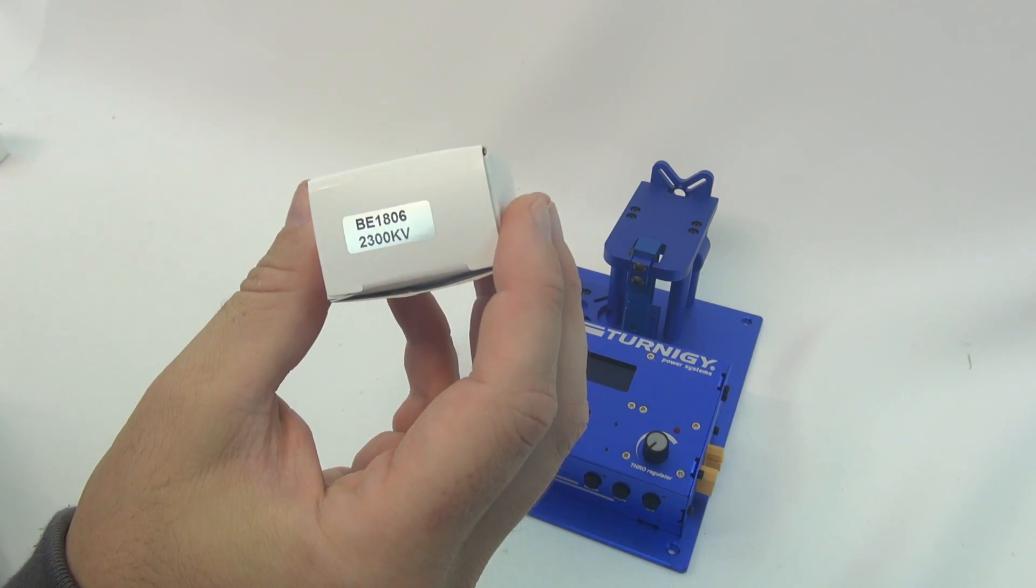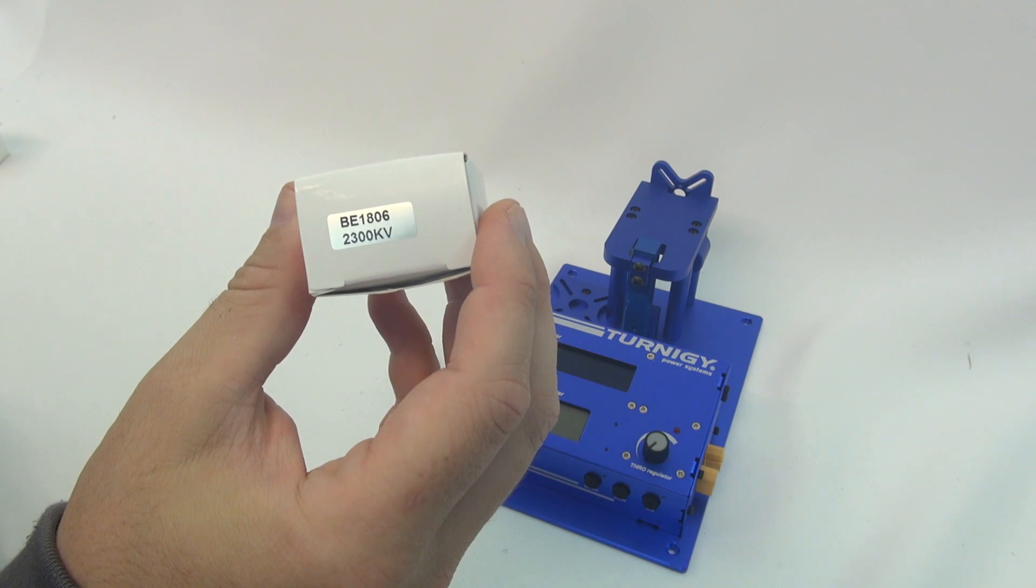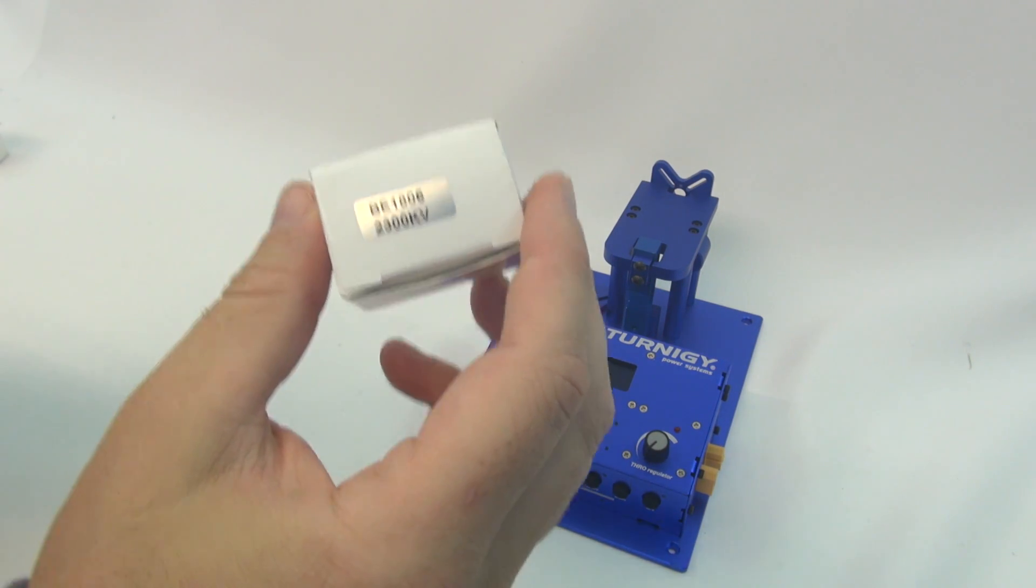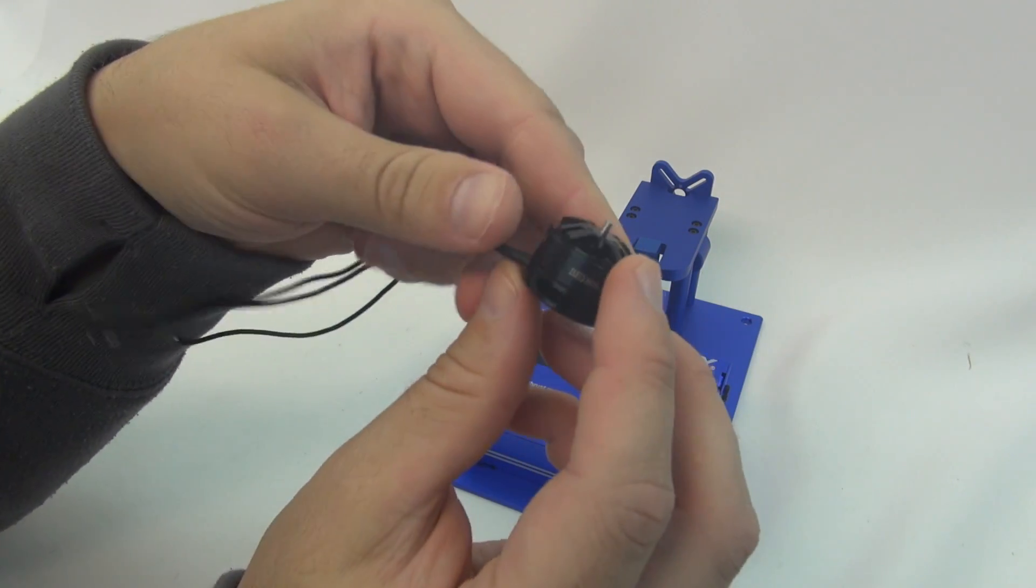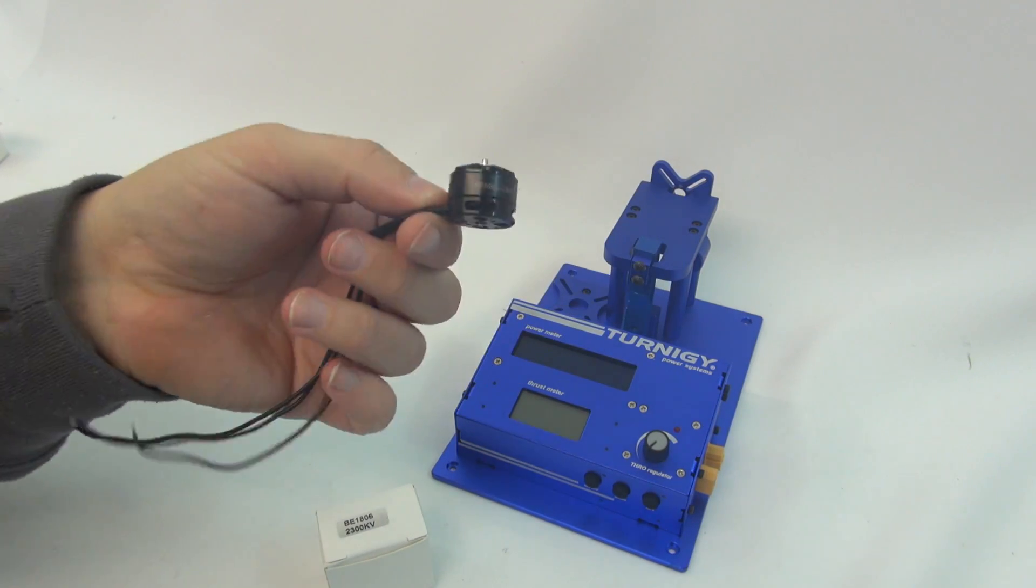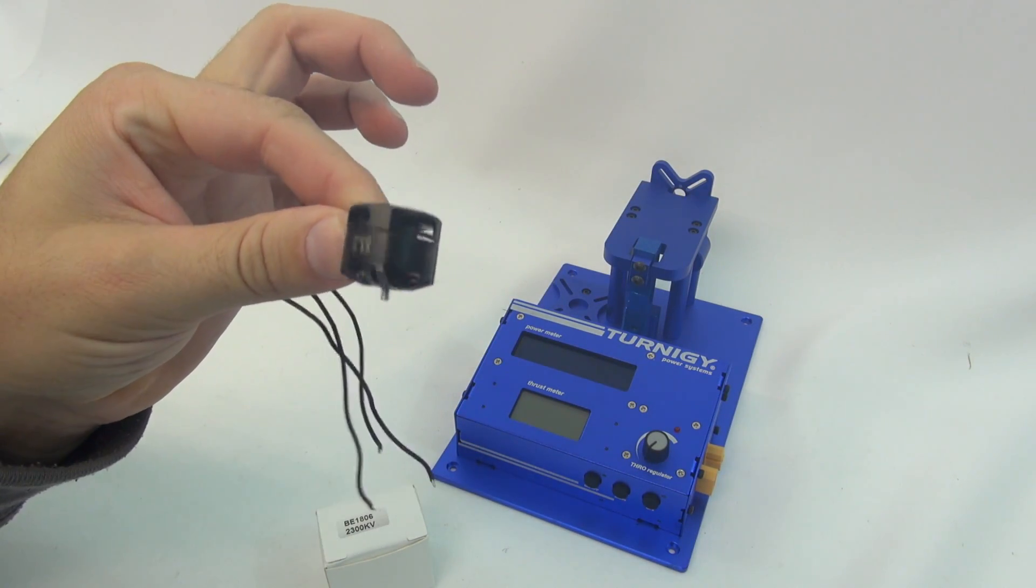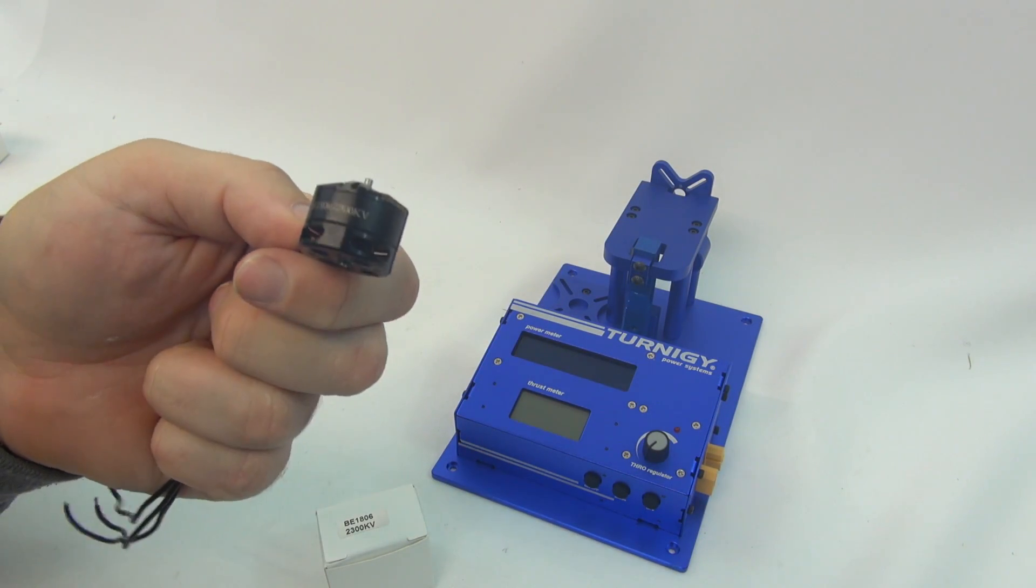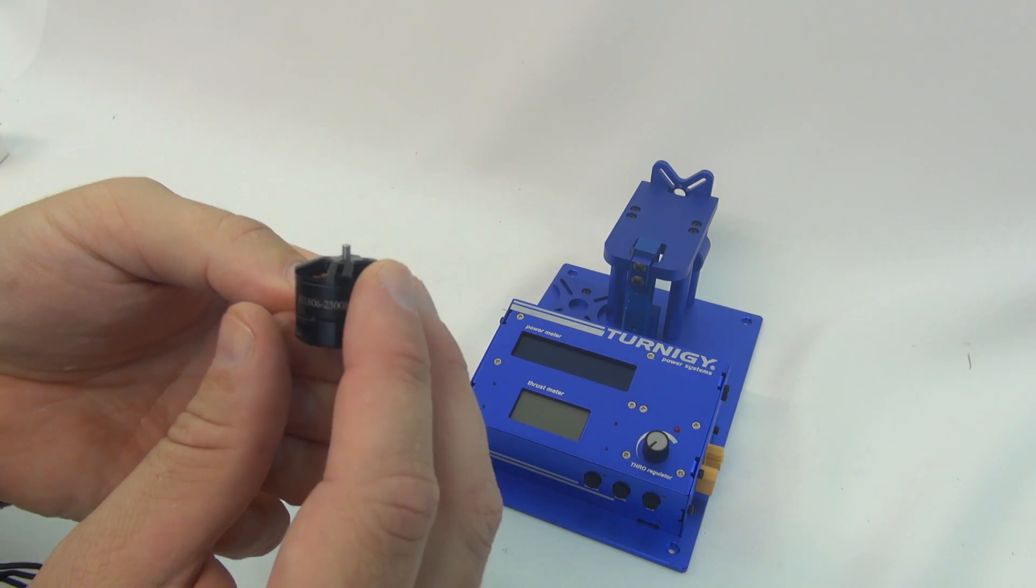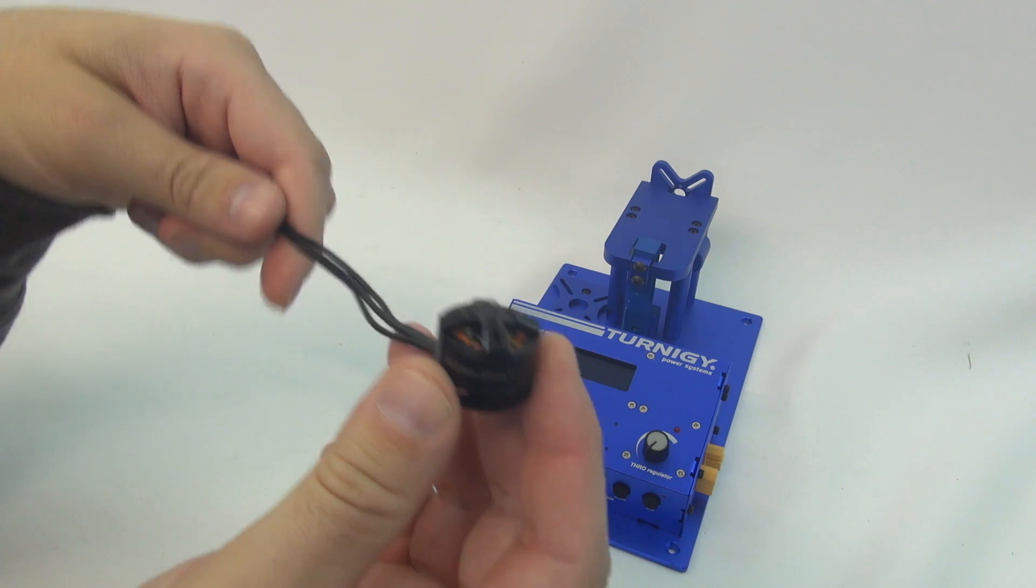So I'm going to do my first test on some DYS BE-1806 2300KV motors. I've actually got these to replace the DYS 1308 I think they were on the Baby B. I'm going to 4-cell on that, so I'm going to need a motor that can actually handle that kind of current. That's why I've gone for these cheap but cheerful BE-1806 2300KV motors.